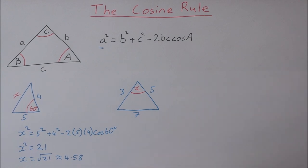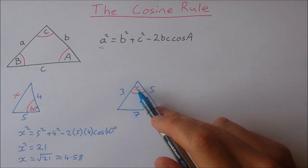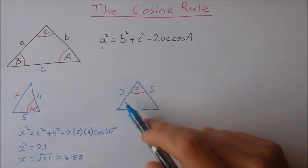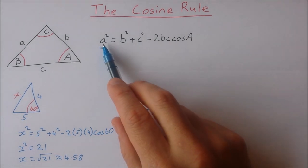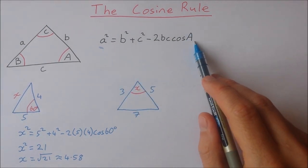Now in this second example we have an unknown angle and we have three sides. Now it's a little bit different because this time we're not solving for a. We're solving for big A.